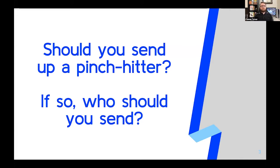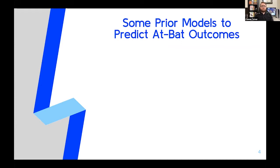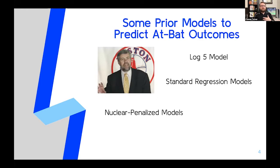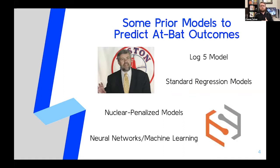Baseball researchers have been looking into this problem for decades. Like a lot of things in baseball research, it really started with Bill James, whose famous log five model was applied to basic at-bat outcomes. After that, we've seen a ton of different models trying to look at the same situation — some using more standard regression models, like the outcome predictor over at FanGraphs, and some using more complicated models, like a nuclear penalized multinomial regression. Even at this very conference, we're seeing another approach with Singularity, which uses machine learning algorithms and neural networks. I highly recommend you check out their presentation tomorrow. But for right now, I want to present yet another way of looking at this pinch hitter problem.